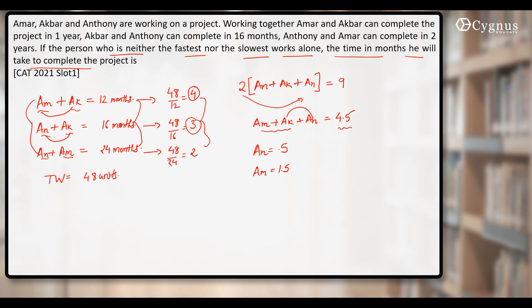Now out of 4.5, Anthony has done 0.5 in one month. Amar has done 1.5. So the one left is Akbar. Akbar can do 2.5, so that this sum becomes 4.5.